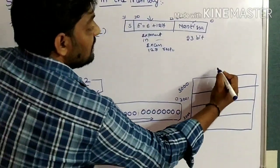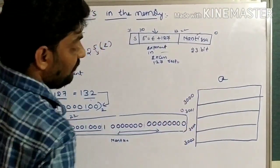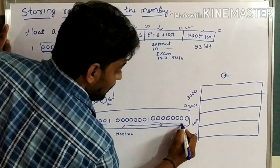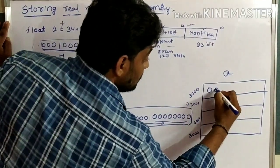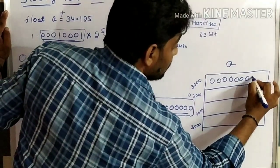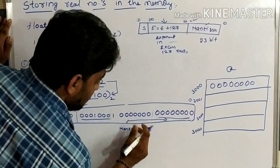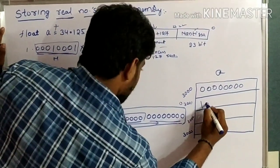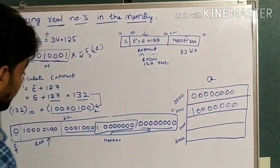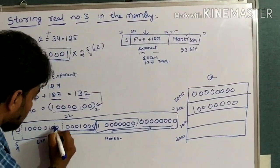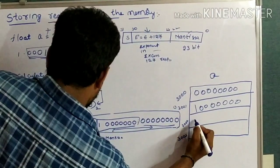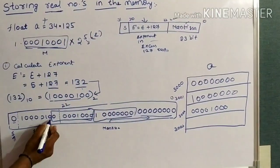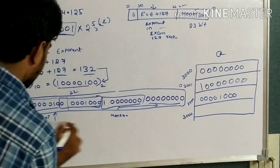Next, this is float A. Memory is allocated for variable A. Let us assume the starting address is 3000. At address 3000, the last 8 bits are stored: 0, 0, 0, 0, 0, 0. Next 8 bits are stored at 3001. Next 8 bits are stored at 3002. Next 8 bits are stored at 3003.